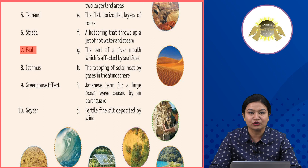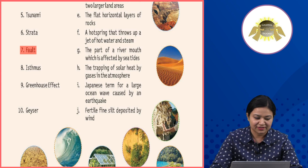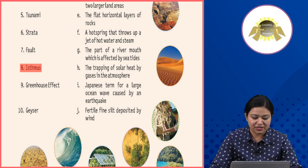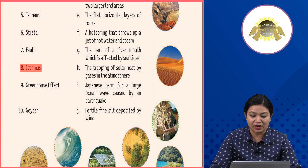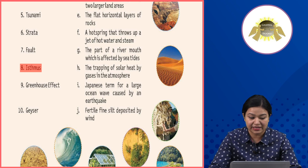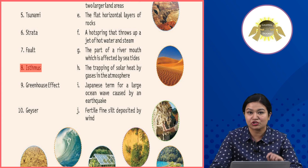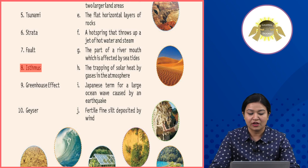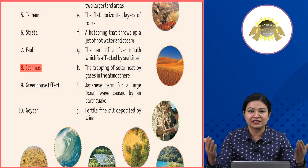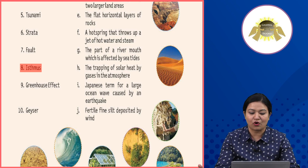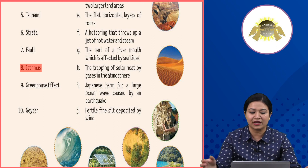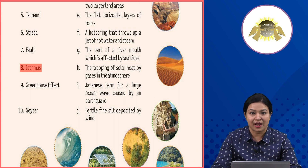Eighth: Isthmus — a narrow strip of land with water on each side, joining two larger land areas. So isthmus is a narrow strip of land that has water on both sides and it joins two larger land areas together.